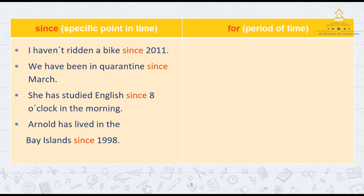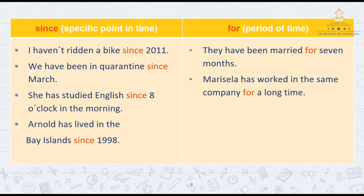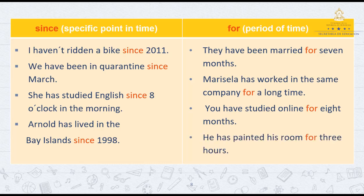Now we are going to see examples about expressing 'for', which is when we mention a period of time. They have been married for 7 months. Maricela has worked in the same company for a long time. You have studied online for 8 months. He has painted his room for 3 hours. Each example mentions a number and a time word, or an expression like 'a long time', representing a period.